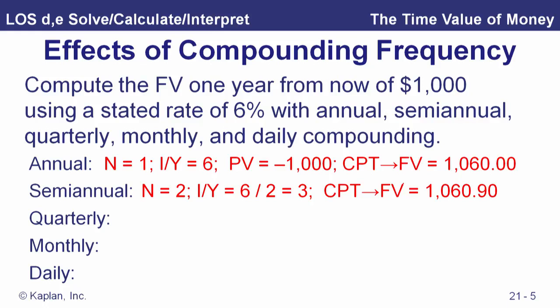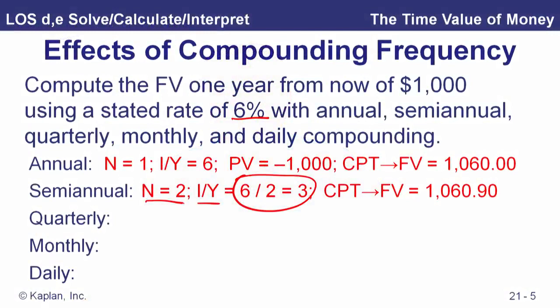With semi-annual compounding, if our stated rate is 6%, we divide by 2, so our interest rate is 3% for two periods. Notice payment is 0 — best practice is to enter it explicitly as 0 so you remind yourself what's going on. With more frequent compounding, the account grows to a bigger number, just as the effective annual rate is greater with more frequent compounding periods. For quarterly, we divide the stated rate by 4 and use 1.5% for 4 periods.